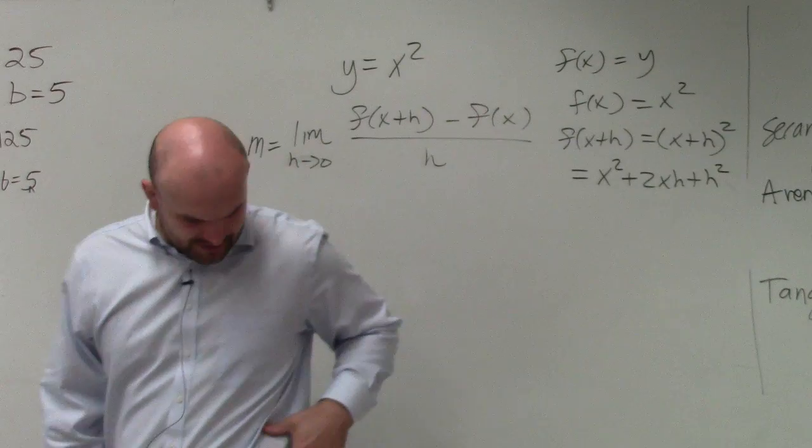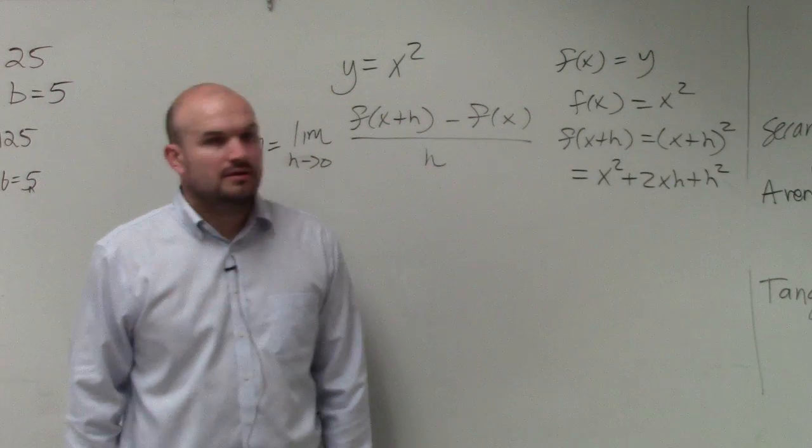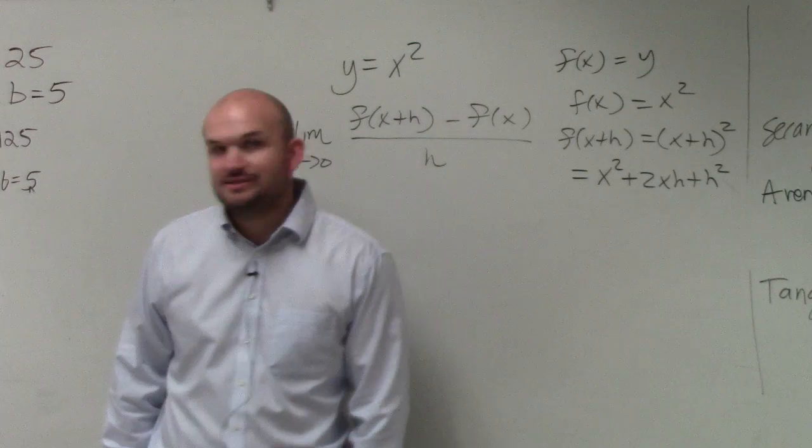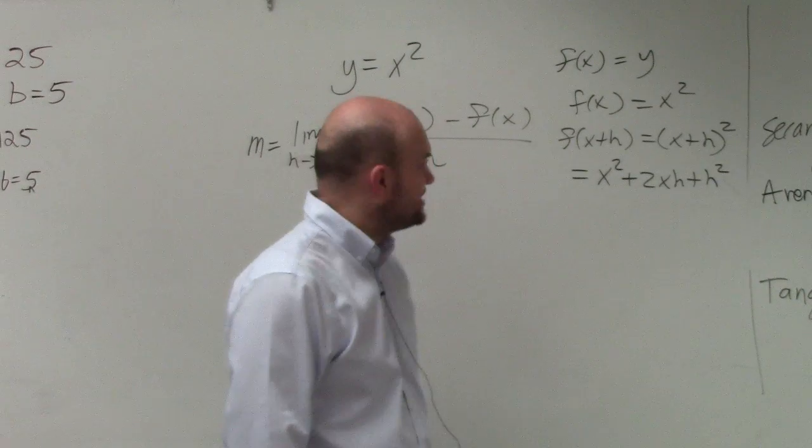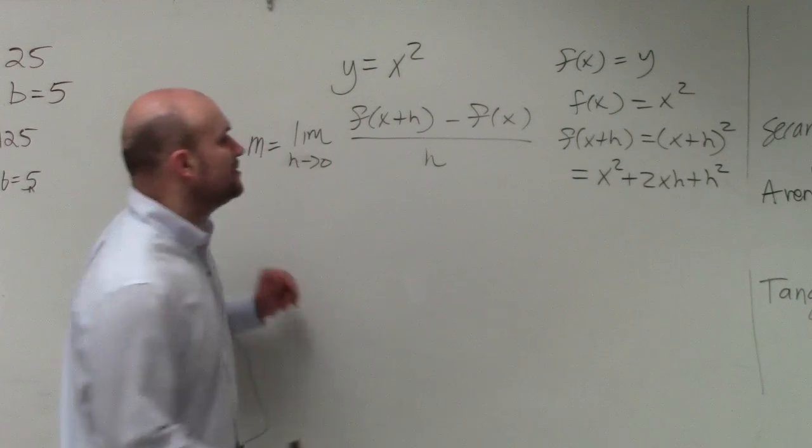(x+h) squared gives you x squared plus 2xh plus h squared. x times x is x squared, h times h is h squared, x times h plus x times h. So now let's plug all this in.